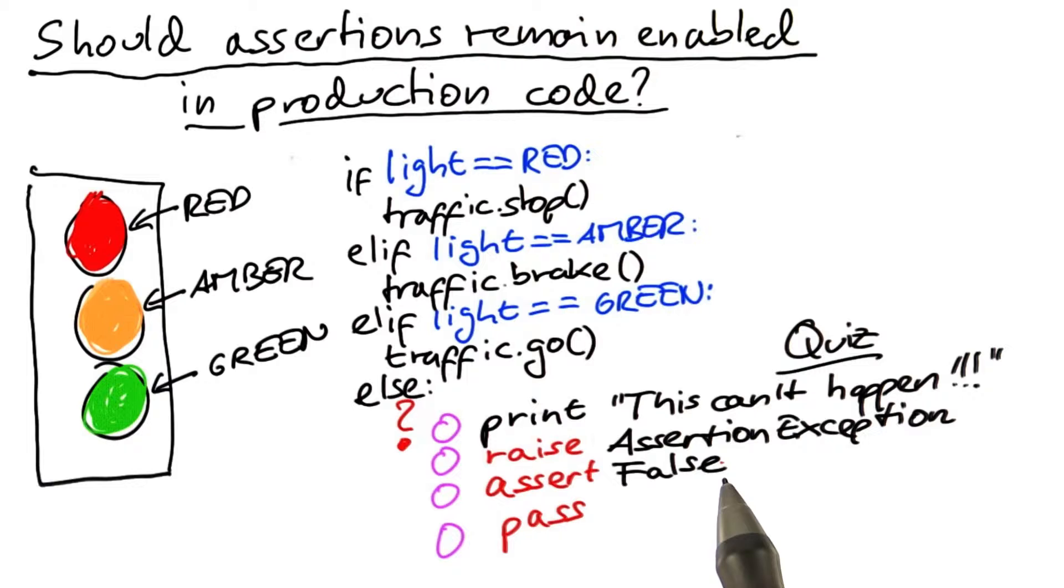Now for the two remaining choices, and this is a tough choice. We could have the assertion in here, assert false, which would be nice, but keep in mind that this could actually also be turned off,